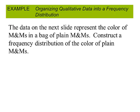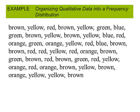Let's look at an example. The following data represents the colors of M&Ms from a plain bag of M&Ms. Construct a frequency distribution of the color for the M&Ms. So this is our raw data. It's very hard to glance at this raw data and get anything from it. It would be hard to see which one occurred most often, least often.